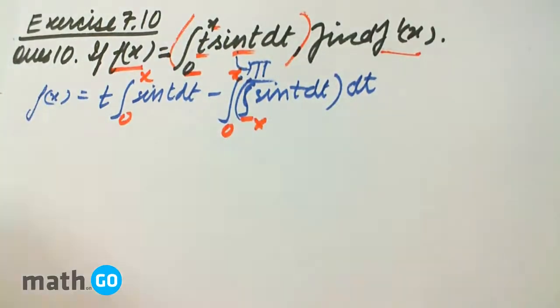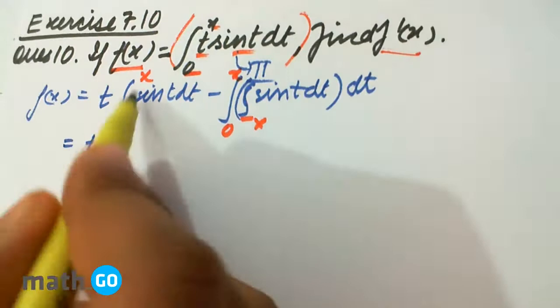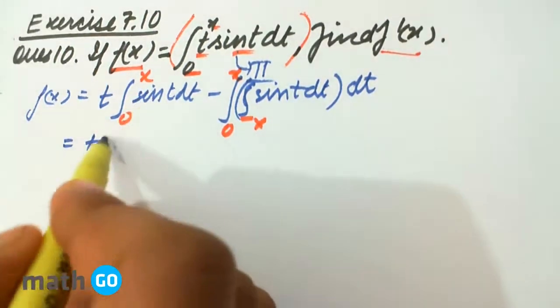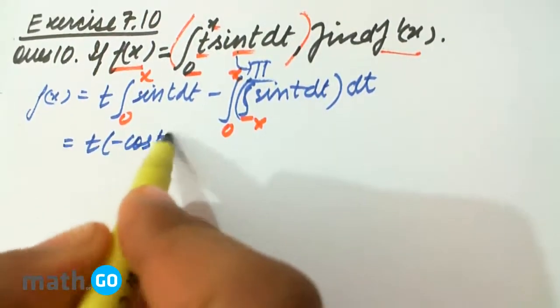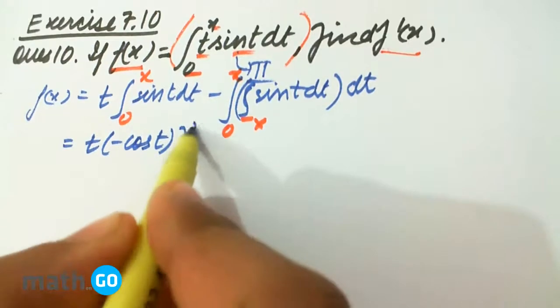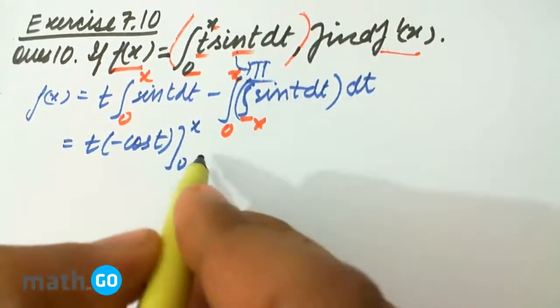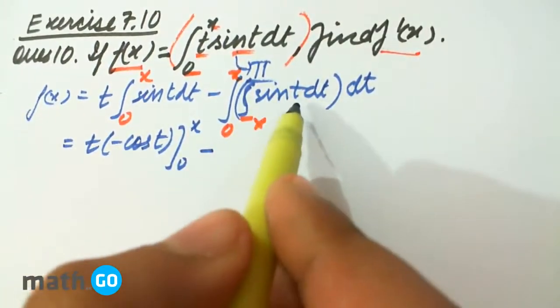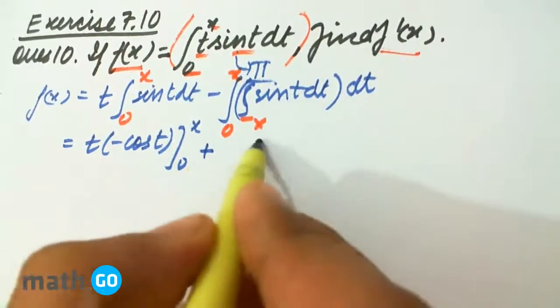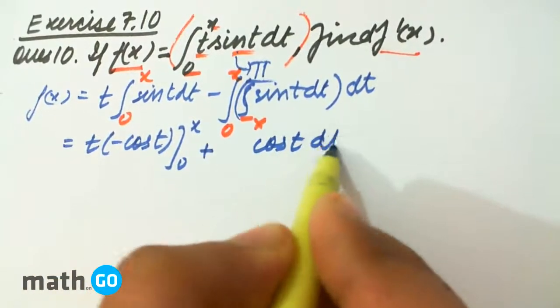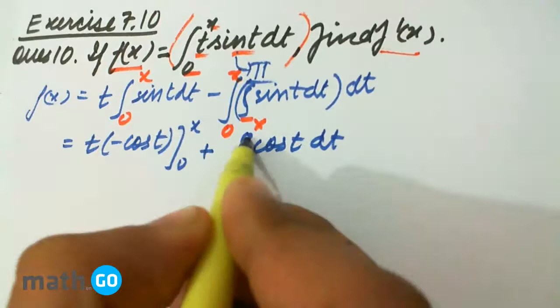So we are left with t, its integration will be minus cos t from 0 to x, minus its integral is minus cos t, so plus cos t dt, integration from 0 to x.